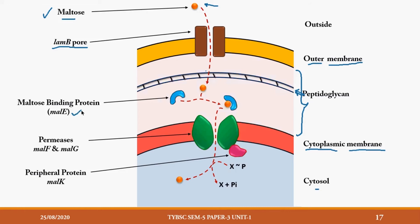Once maltose has crossed the outer membrane, there is no problem crossing the peptidoglycan layer, and it enters the periplasm. In the periplasm, there is a component called the maltose binding protein. Binding proteins are specific for a particular solute, so this one specifically binds to maltose. It is the gene product of the gene malE — written in italics and small letters as the gene name, and as capital MalE as the protein name.